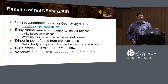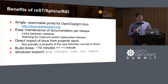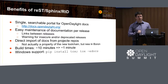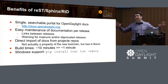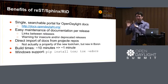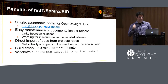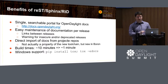The key benefits: we have a single searchable portal at docs.opendaylight.org. Easy maintenance of documentation per release because branches are versions. New in Boron: we made it possible to import documentation directly from remote project repositories, so when you add features you can document them and have them appear automatically. The build time went from about 10 minutes to one minute — a huge win. We also got Windows support — if you do pip install tox and run tox, it builds on Windows.